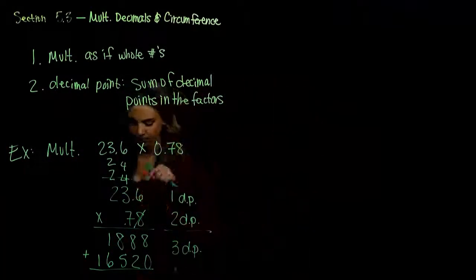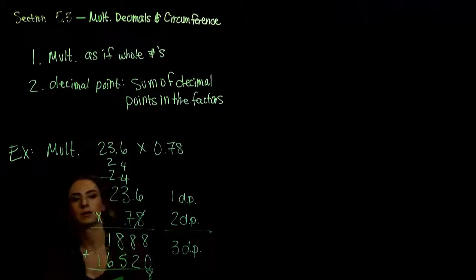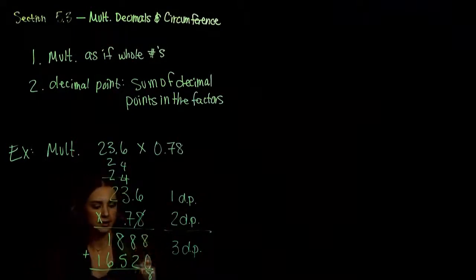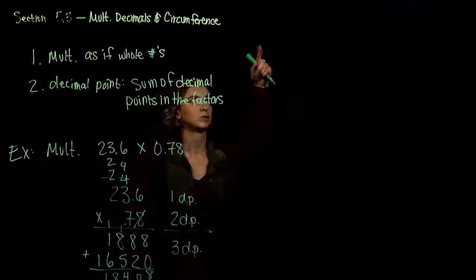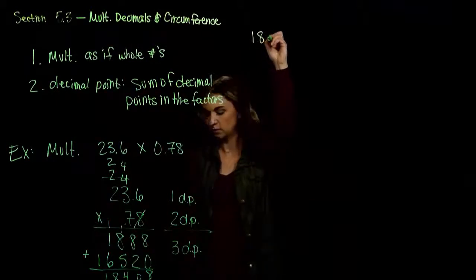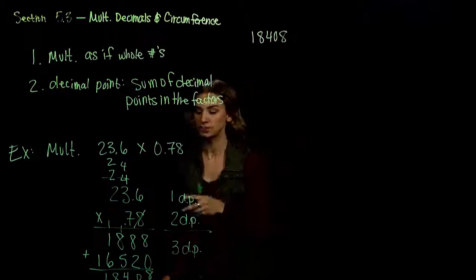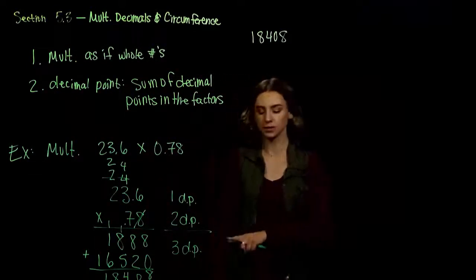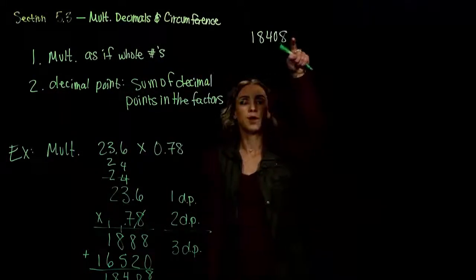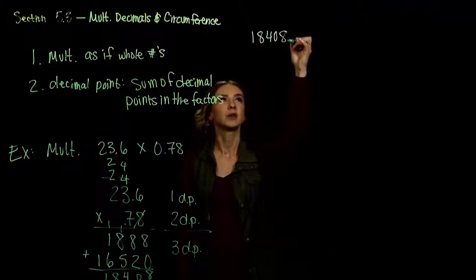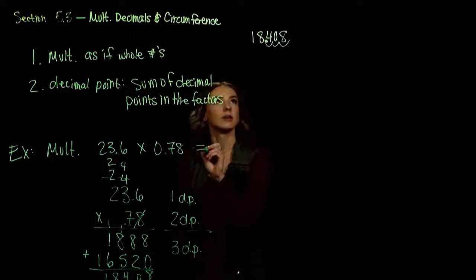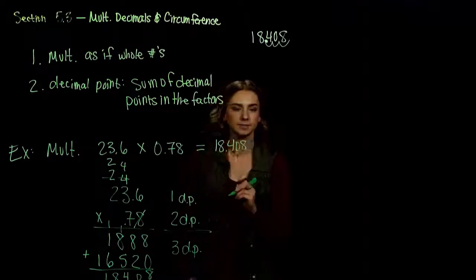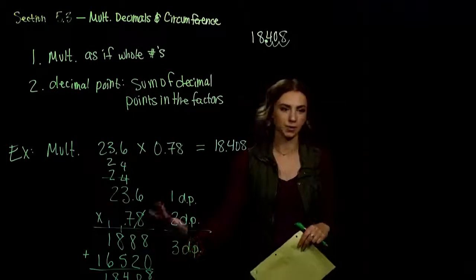Then we'll throw in our decimal point. Adding down: eight and zero is eight, eight and two is 10 — carry the one. Eight and five is 13, plus another one is 14 — carry the one. Six, seven, eight, and one. So the value we currently have is 1848. That was just multiplying as if they were whole numbers. But we were multiplying decimals, so we have to move in three decimal places from the end. Moving in one, two, three — multiplying these two gives us 18.408.